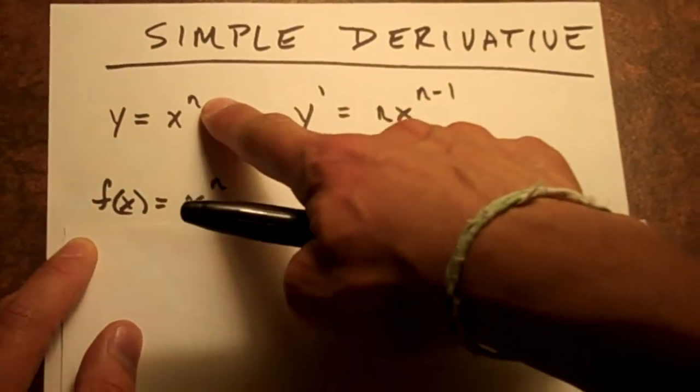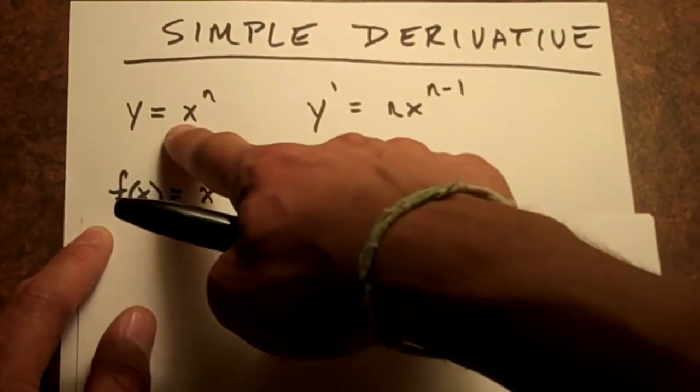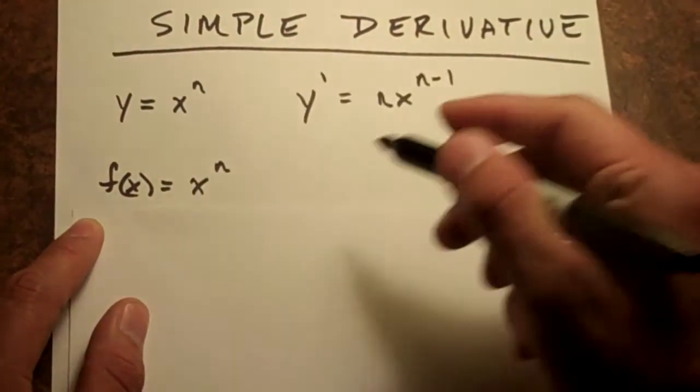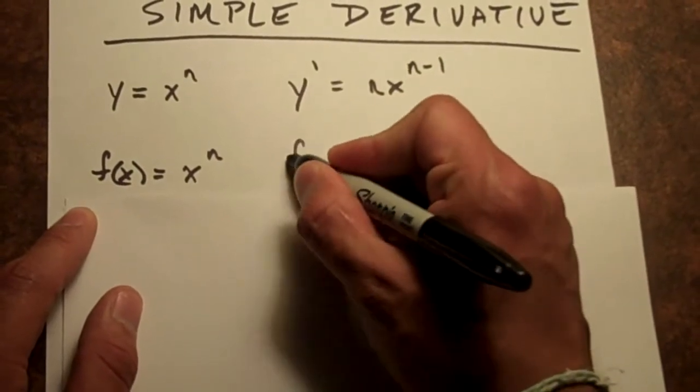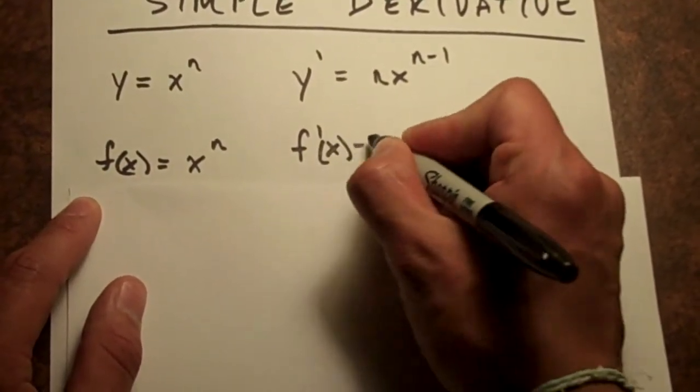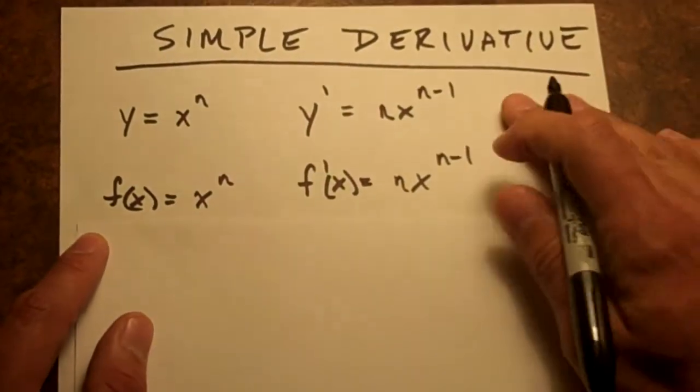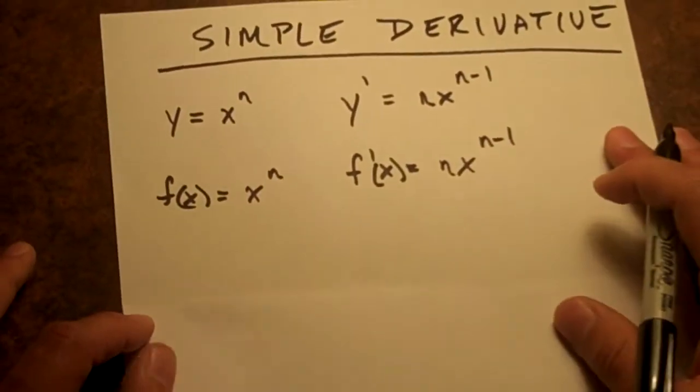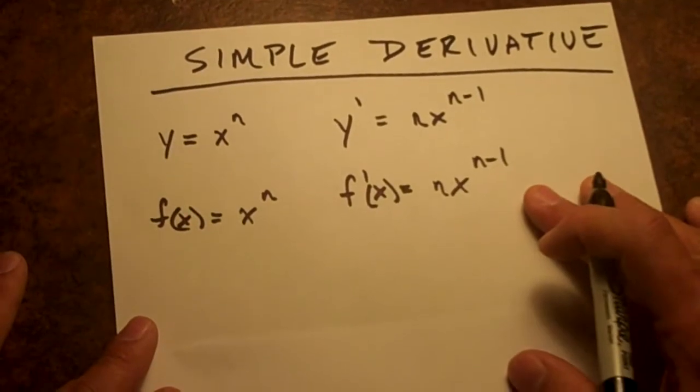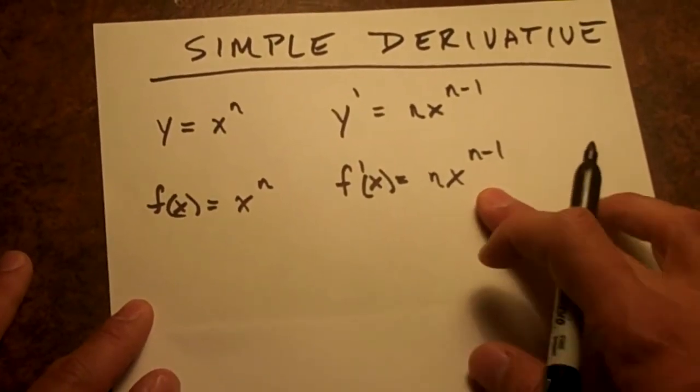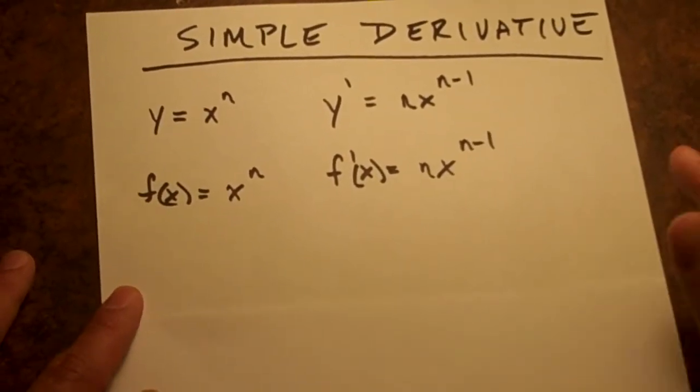Whatever this number is up here, you just put it out front and multiply it and then subtract 1 from that. Same thing right here. It's just different notation. n x to the n minus 1. Basically, you can have any function and use this formula and you'll pop out with the derivative of that simple function.